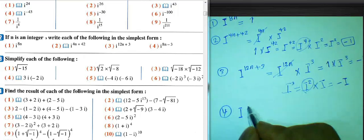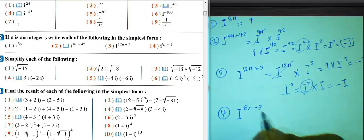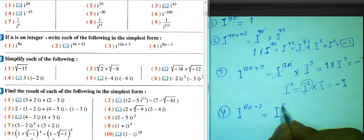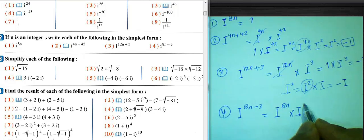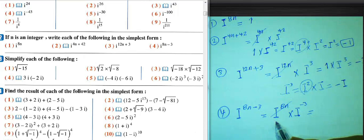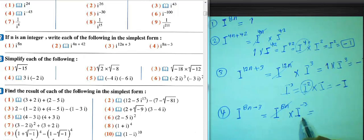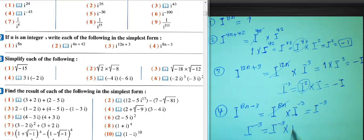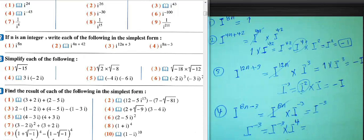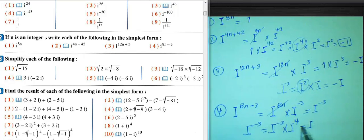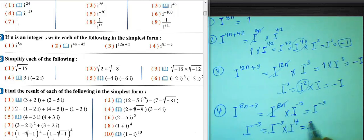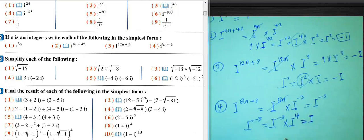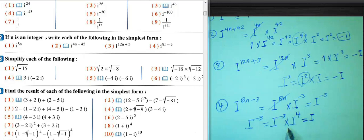Next: i^(8n-3). We write i^(8n) times i^(-3). i^(8n) equals 1, so we have 1 times i^(-3). To solve i^(-3), multiply by i^4, since i^4 equals 1. The exponent becomes 4 minus 3 equals 1, so the result is i.